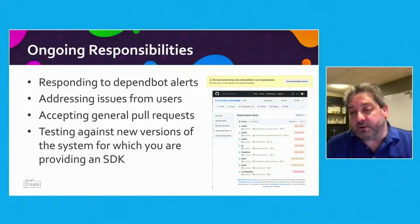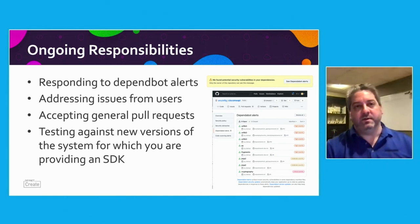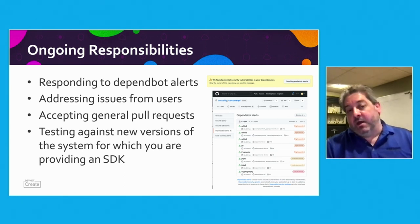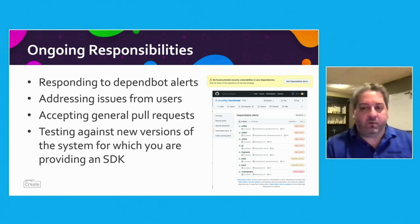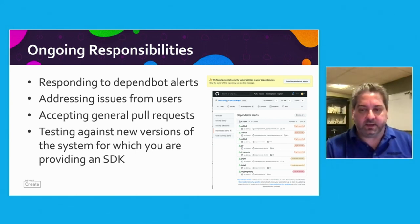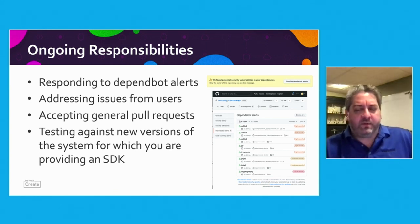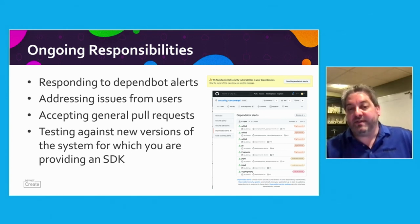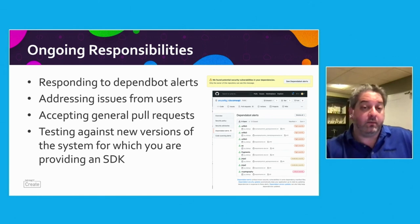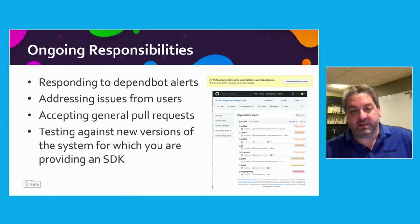If your library becomes popular, you'll have to address issues from users. They may use the issues facility within GitHub or GitLab to report bugs or feature requests, or even provide pull requests with code they'd like to suggest you add to your project, so you'll want to keep up to date on all those. And finally, as new versions of the system you're providing the SDK for come out, you'll want to test to make sure your SDK is still compatible, or add functionality to support new features they've added.